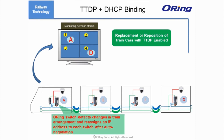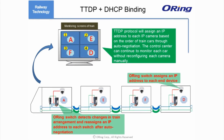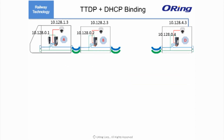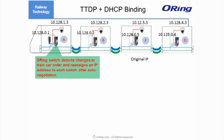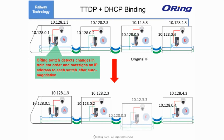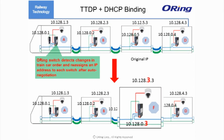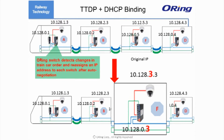Therefore, the screens originally showing images from switch B and C will now display images from switch E and F. Through TDDP, ORing switches will detect changes of the train and negotiate with the network devices to assign them a new IP that matches the new arrangement of train carriages. TDDP optimizes inter-consist communication efficiency, making the network faster, more precise, and more flexible. TDDP not only saves network configuration time but also ensures safe train operations as man-made errors are significantly reduced.